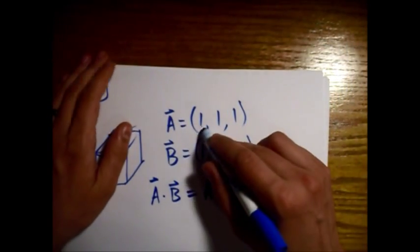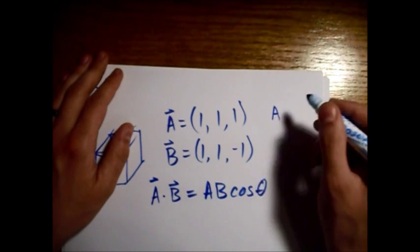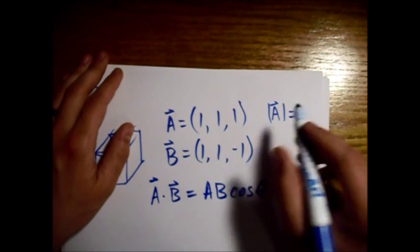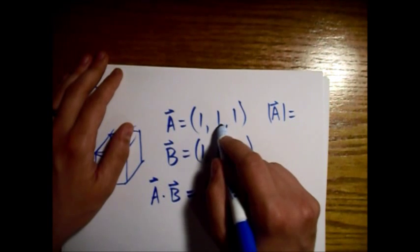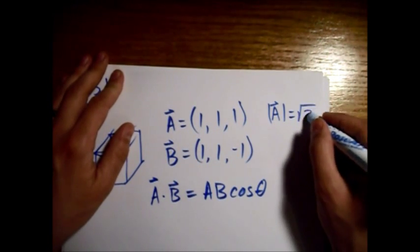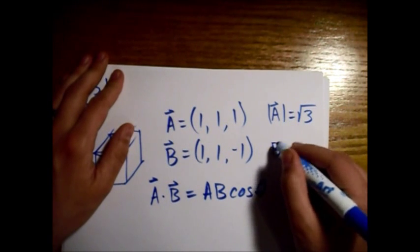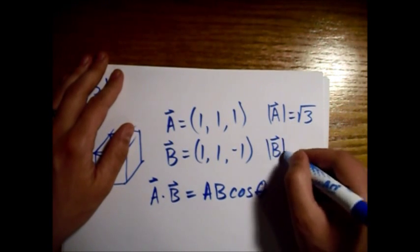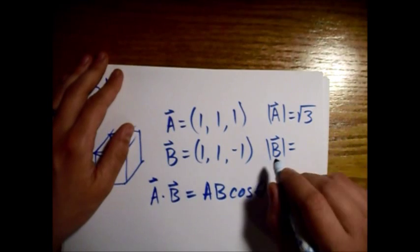The magnitude of A is, so we take one squared plus one squared plus one squared and then take the square root and get the square root of three, and that's the same for B because the cube is symmetric.